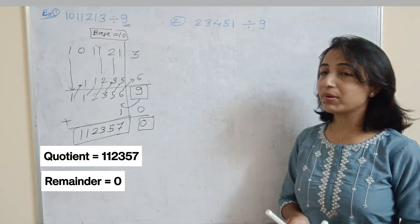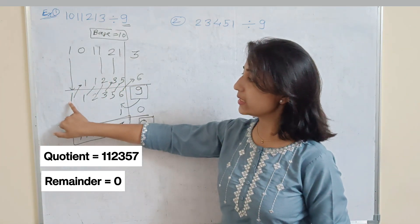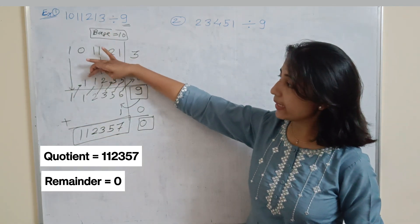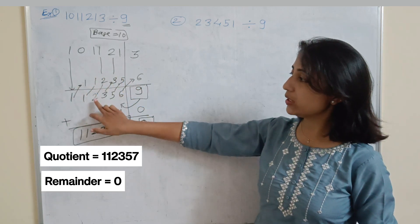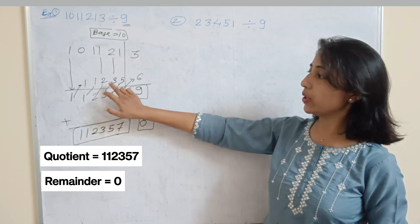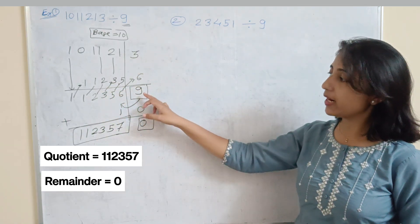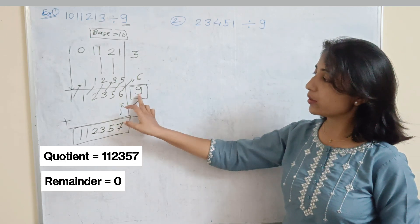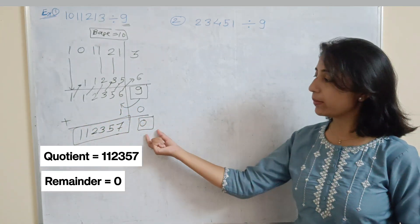To summarize the process when dividing by 9: write the first digit as it is, add that result to the next digit, take the addition and add it to the following digit, and continue this process to the end. If the final addition gives 9, that means remainder is 0 and you add 1 to the quotient part. This gives us the quotient and remainder.